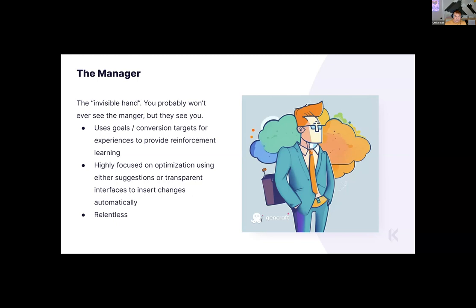Thinking about the scale of this: how much structured data do you have and how complex is the task? On the highly complex, highly structured data side is that Manager box. Still structured but more complex is the Creator — those are really hard problems. All the simpler tasks on the left side, using structured or unstructured data, are very present and very doable right now. At Knapsack, we're in the late stages of the left side and the early stages of the right. There is no one AI solution — it's lots of different problems with varying complexity requiring lots of different AI systems working together.